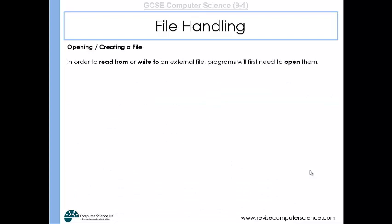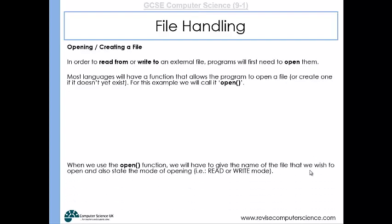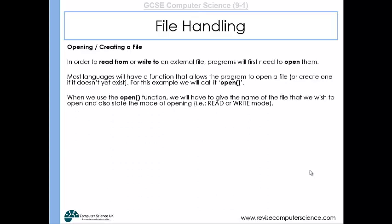In order to read from or write to an external file, programs first have to open them. Most languages will have a function that allows the program to open a file or create one if it doesn't yet exist. For this example, we will call that function open. When we use that function, we'll have to give the name of the file that we want to open and also state the mode of opening - either read mode or write mode. We also need to assign the file to a special variable within our program so we can start working with it, and that special variable is called a file handler.